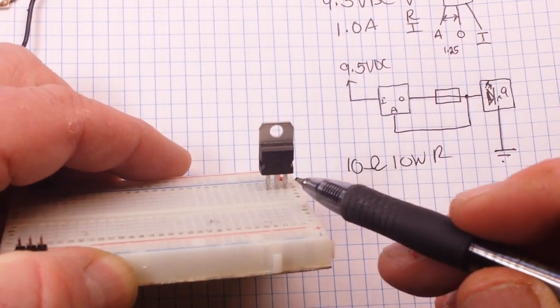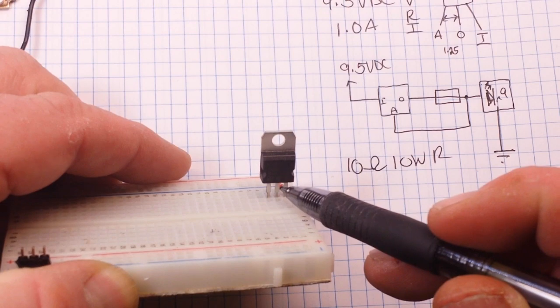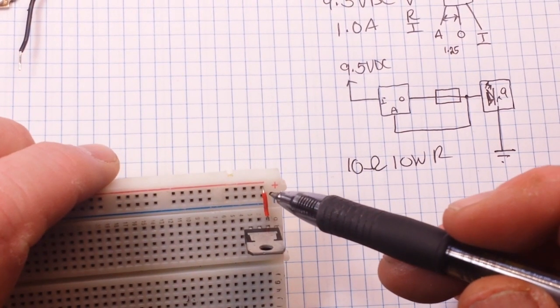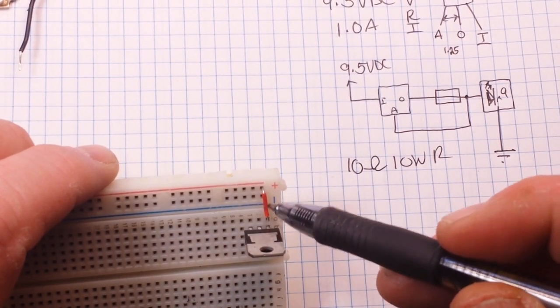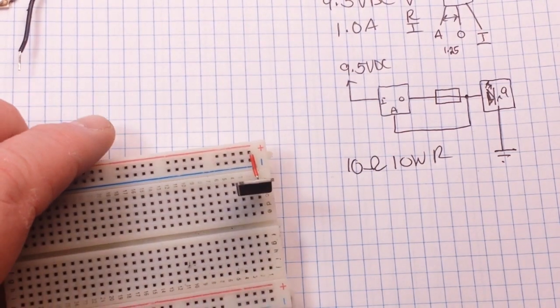Here's our LM317. This is adjust, out, in. So our in is taking the VCC here. Okay.